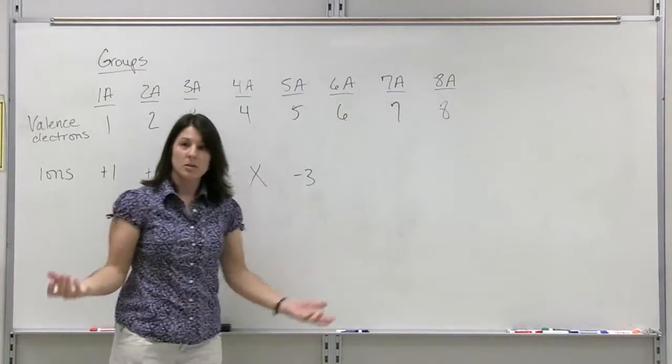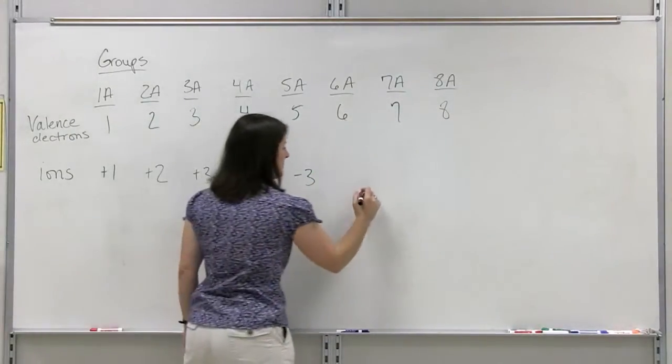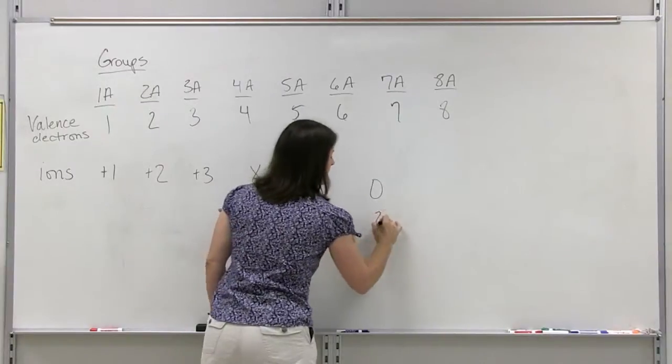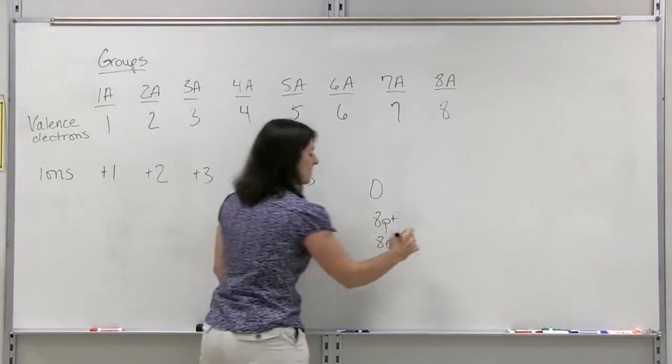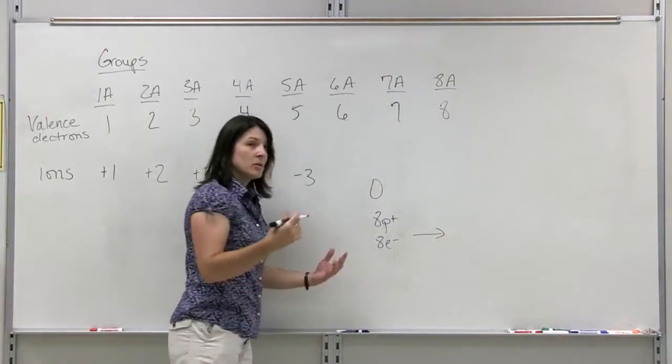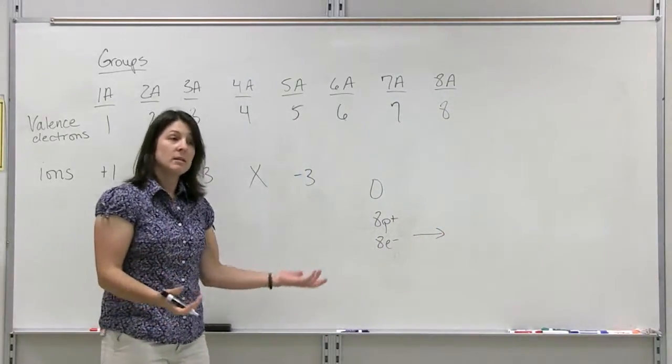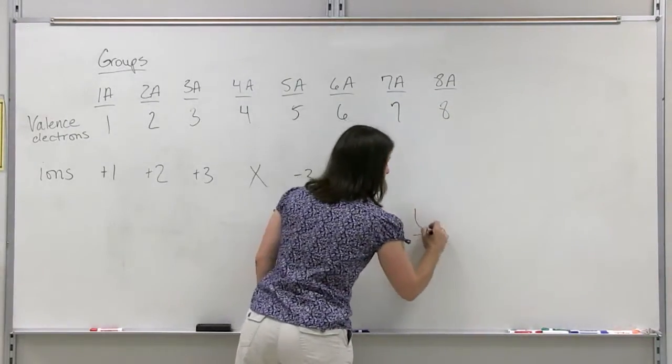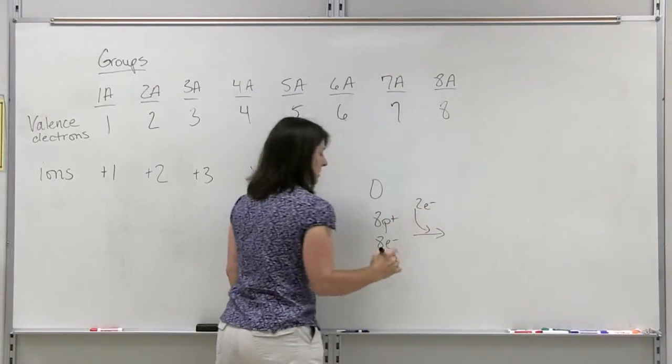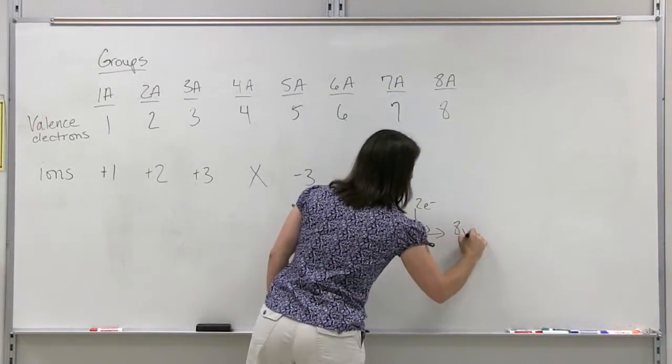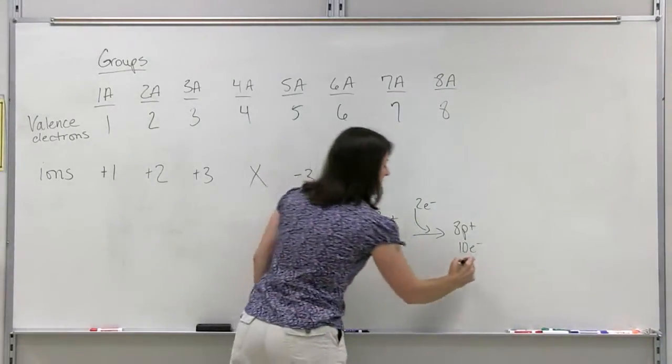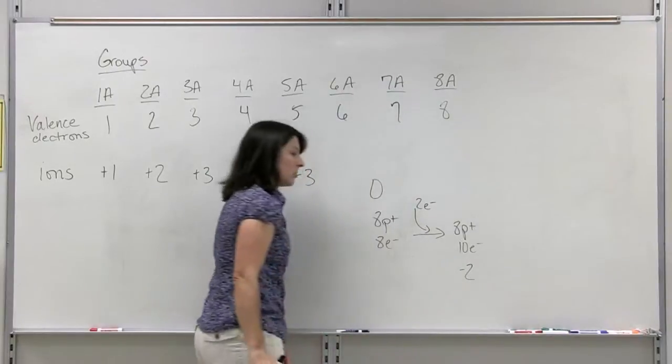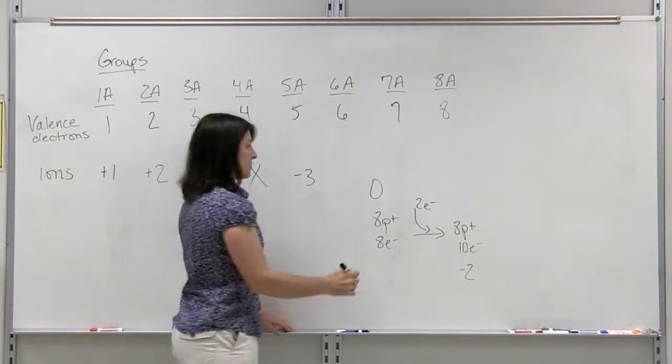Group 6A, oxygen for example, oxygen has eight protons, eight electrons. Its nearest noble gas, what it wants to look like is neon, which has ten electrons, so we're going to gain two electrons. Eight protons, ten electrons. It's going to have a negative two charge because it has two extra electrons.